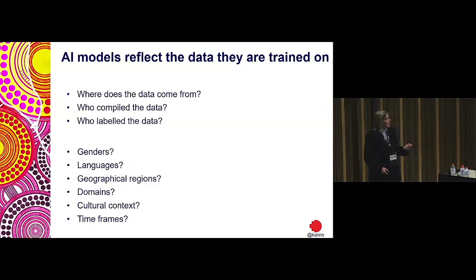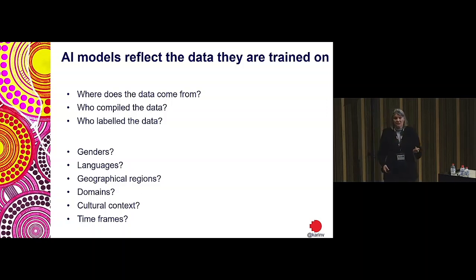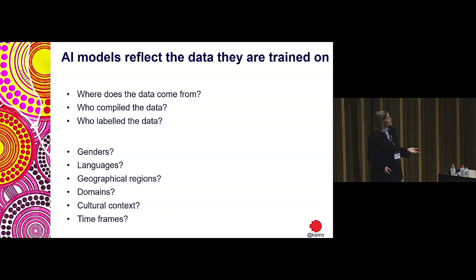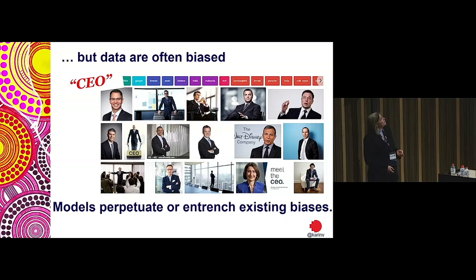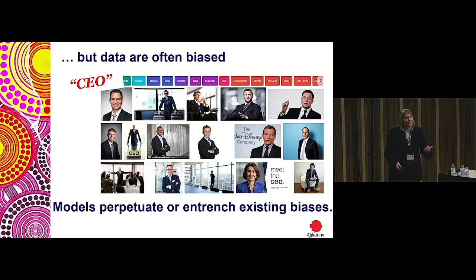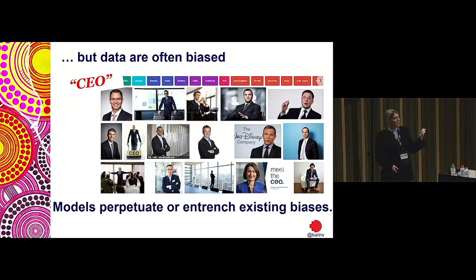We heard about using tools for science — but what kind of scientific knowledge is captured in these models? What are the cultural contexts and time frames? Data are biased. If you type 'CEO' into Google image search, this is what you get back — hopefully it's changed recently, but a screenshot from a little while ago shows mostly men, mostly white men, mostly middle-aged white men, with perhaps one or two women.